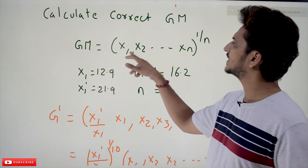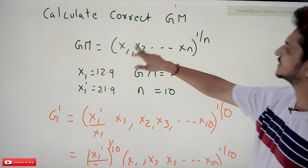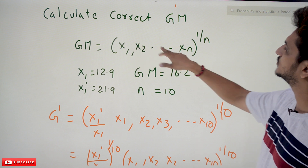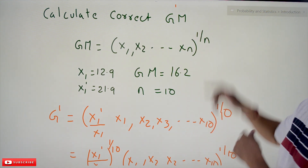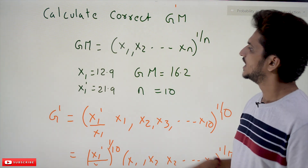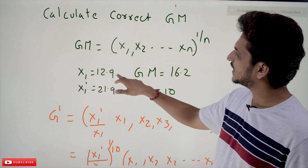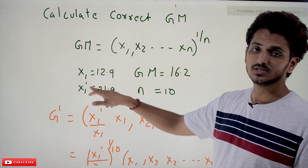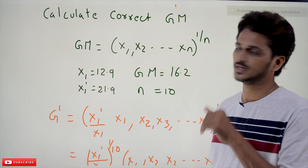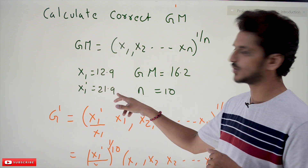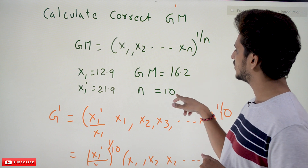The geometric mean is calculated as: x1 × x2 × ... × xn, whole power 1/n. Here x1 was recorded as 12.9; x1' (the actual value) is 21.9; the geometric mean G is 16.2; and n is equal to 10.